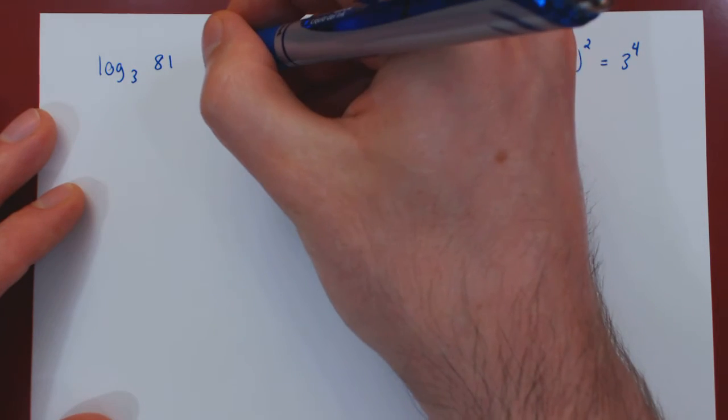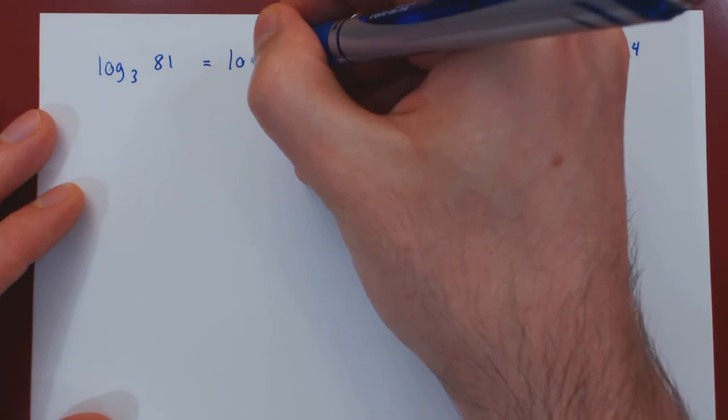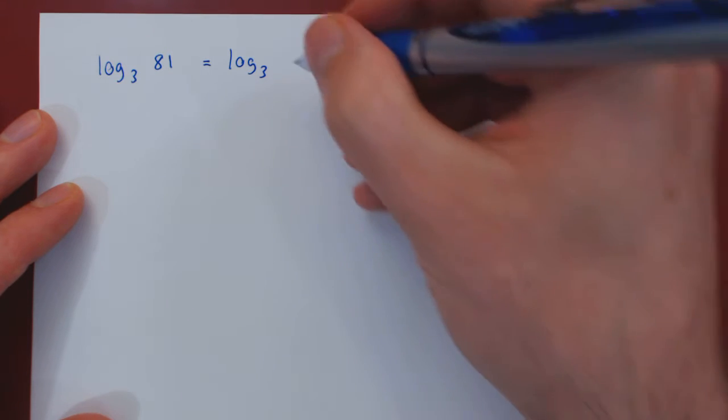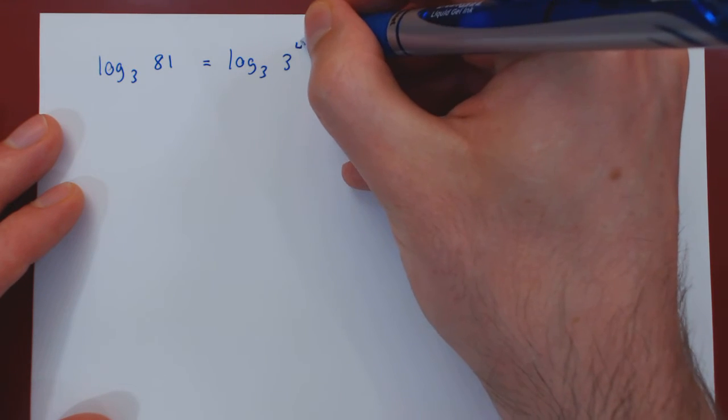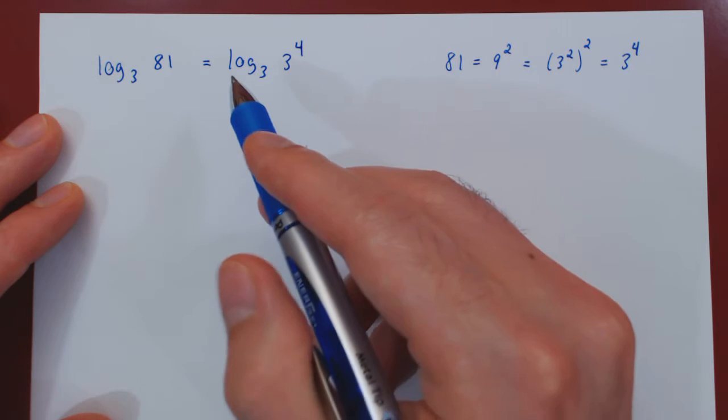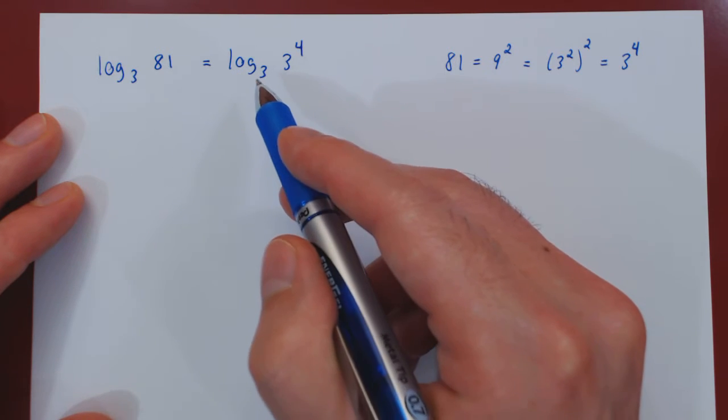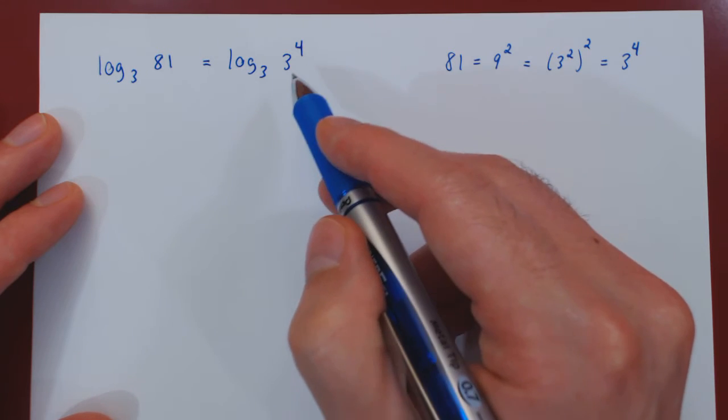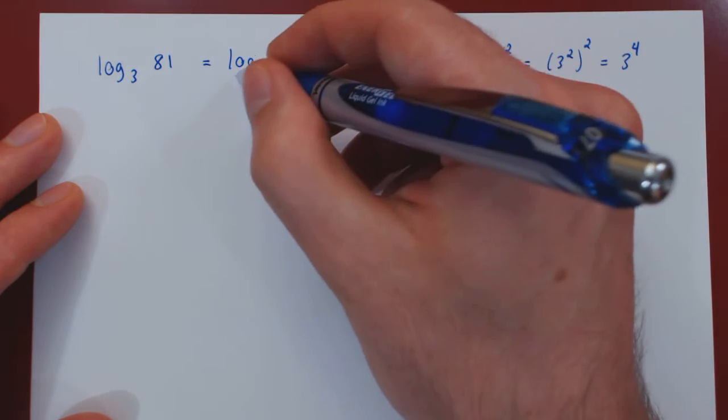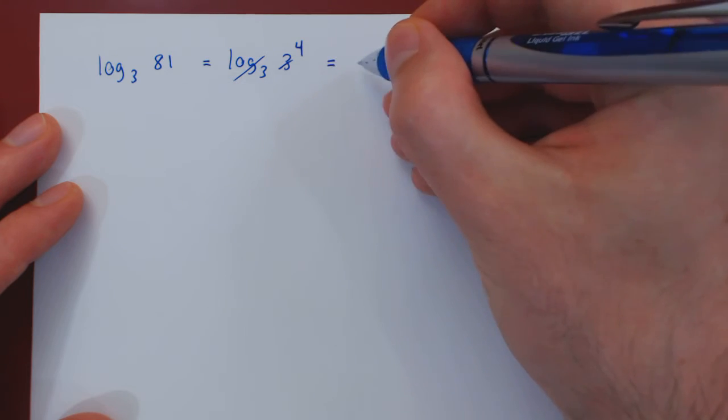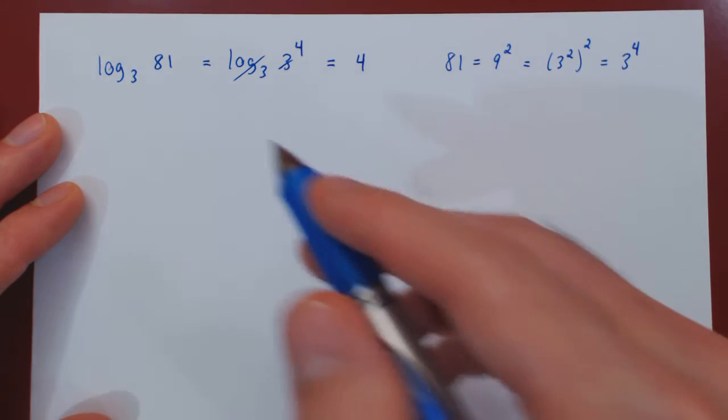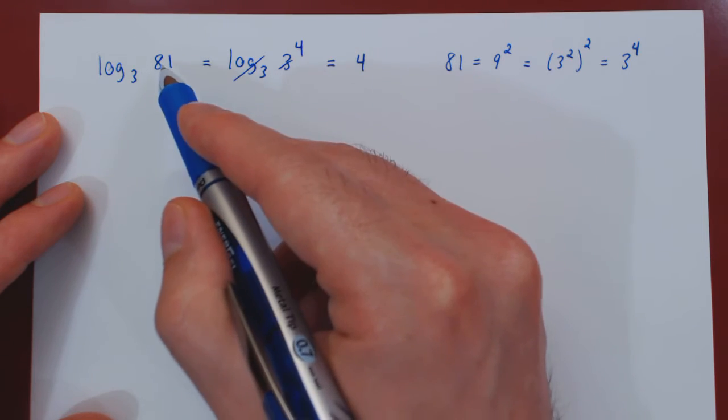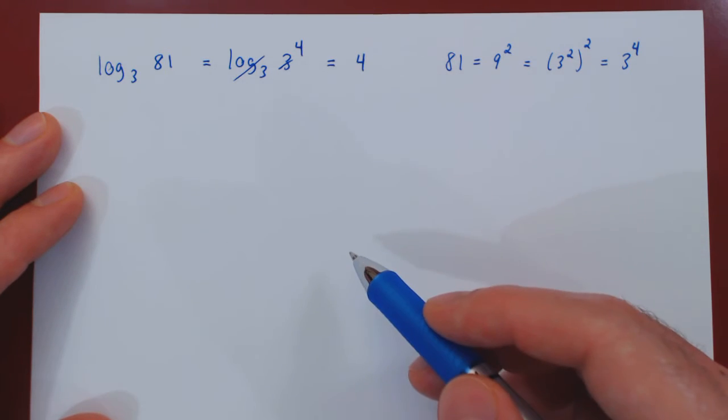So let's replace 81 as a power of 3, so 3 to the 4, and now we have the desired cancellation. The logarithmic function base 3 is, by definition, the inverse of the exponential function base 3. So the logarithm cancels the exponential, and we're left with the exponent 4. Therefore, the logarithm base 3 of 81 is positive 4.